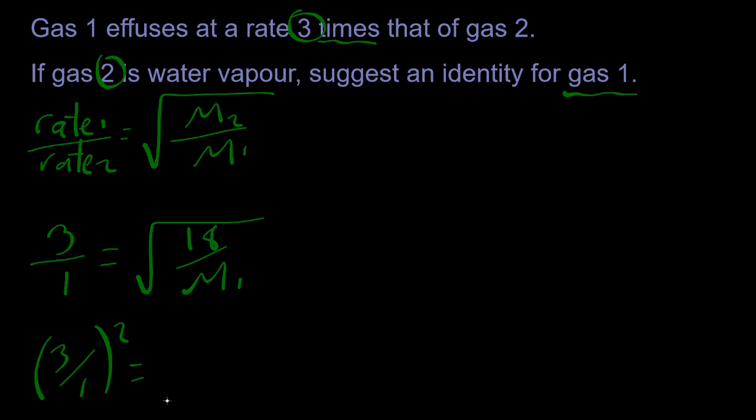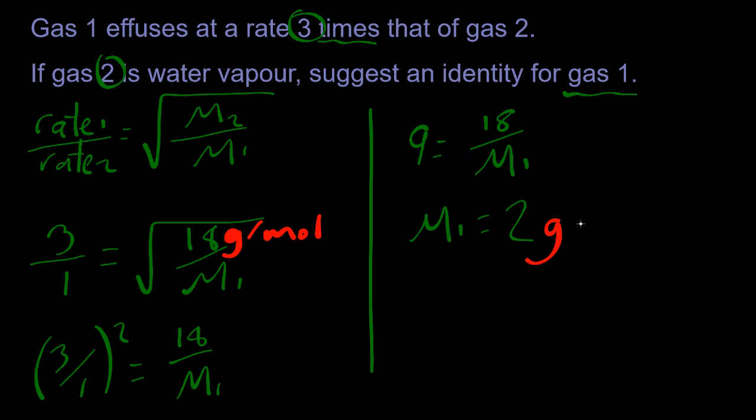Well, those numbers are nice. So that gives me 9 equals 18 over the molar mass of gas 1. Well, that's going to be 2 grams per mole. So what gas is that going to be? Well, probably H2, isn't it? Can't think of any other one. Smashing.